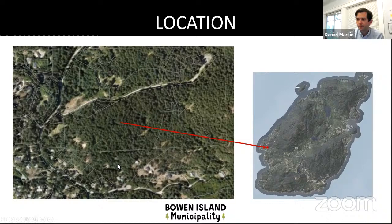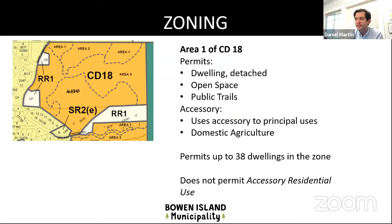Area One of CD18 permits detached dwellings — up to 38 detached dwellings within the zone — plus open space, public trails, uses accessory to principal uses, and domestic agriculture. Crucially for this application, the zone does not permit accessory residential use, which the land use bylaw defines as secondary suites — either attached or detached.